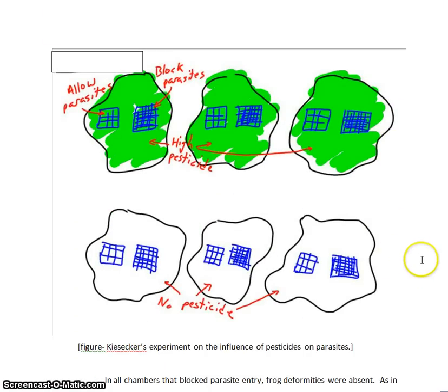Here's a picture of the experiment. So in each pond, the researchers set up two types of cages. The large holes here would allow parasites to get to the tadpoles. The small holes would block the parasites. And furthermore, they found some lakes had high pesticide levels from nearby farms, and other lakes had no pesticide. So they were able to set up four different conditions.